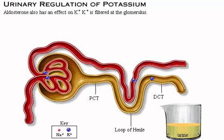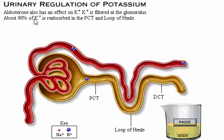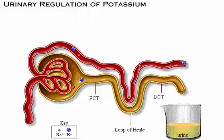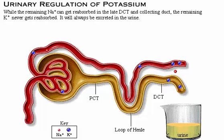Aldosterone also has an effect on potassium. Potassium is filtered at the glomerulus. About 90% of potassium is reabsorbed in the PCT and loop of Henle. The kidney handles sodium and potassium differently. While the remaining sodium can get reabsorbed in the late distal convoluted tubule and collecting duct, the remaining potassium never gets reabsorbed — it will always be excreted in the urine.